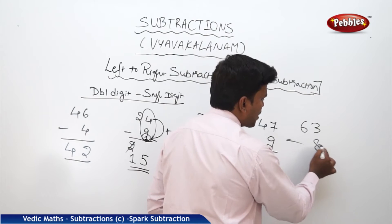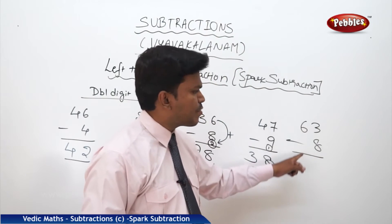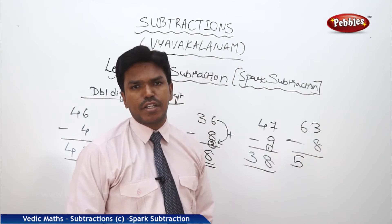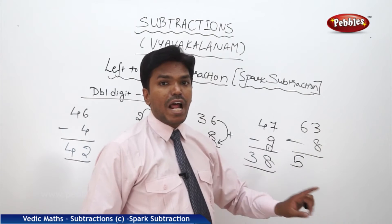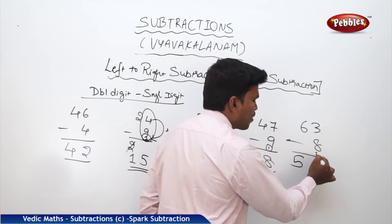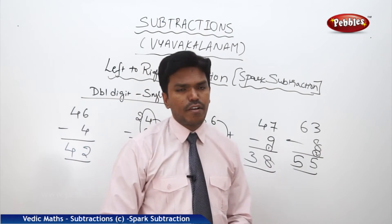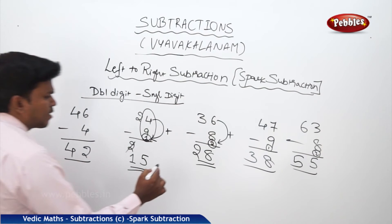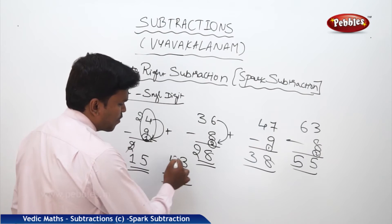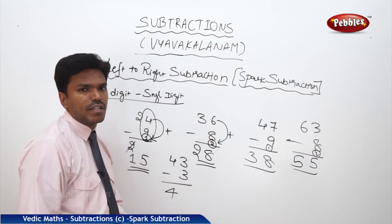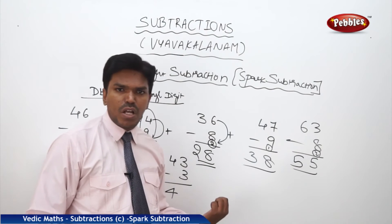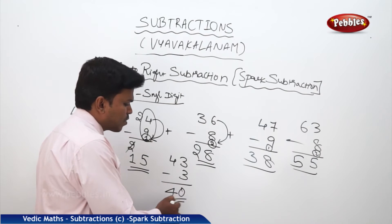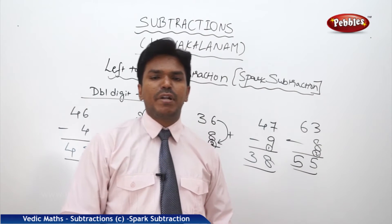Now 63 minus 8. Drop 6, but before dropping, check — they are mismatch. So 6 becomes 5. Now 3 minus 8 is practically not possible. So bring the above number 3 and add to the complement of 8, which is 2. So 3 plus 2 equals 5. Answer is 55. Also, 43 minus 3: the next number is match since both top and bottom are the same number. So 3 minus 3 equals 0. Answer is 40.